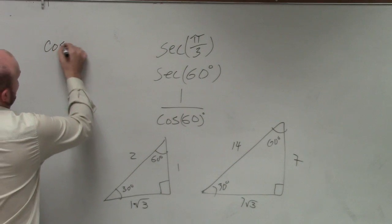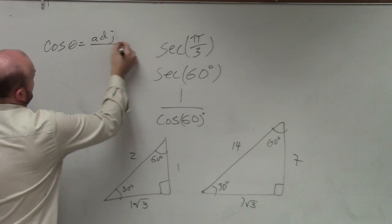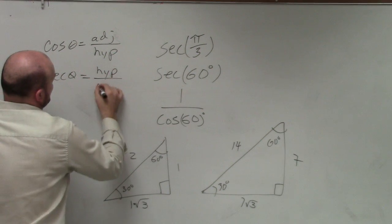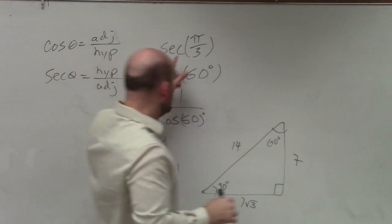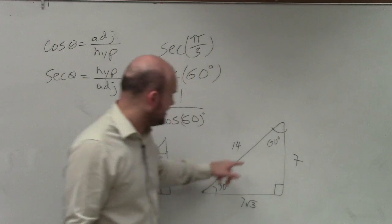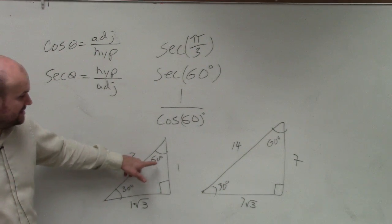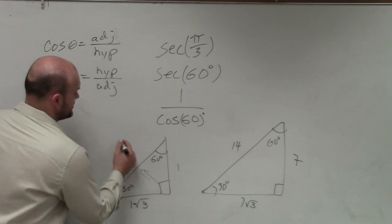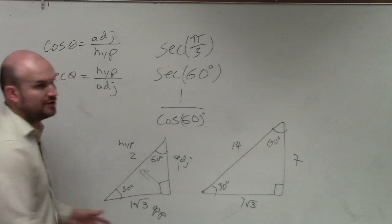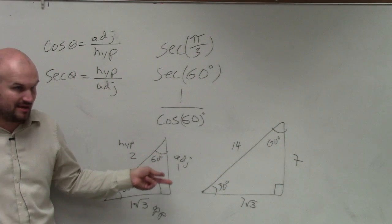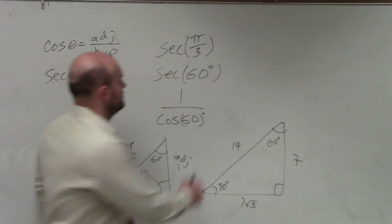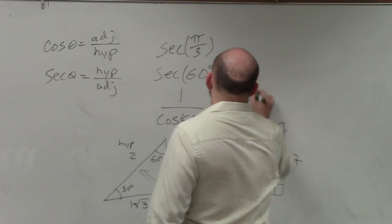We know that the cosine of theta is adjacent over hypotenuse. So the secant of theta is hypotenuse over adjacent. Now, knowing that pi over 3 is the same thing as 60 degrees, it's a little bit easier for me to look at a triangle and say, what is, if there are 60 degrees, this is my hypotenuse, this is my adjacent, and this is my opposite. Does everybody agree how I labeled that triangle based on 60 degrees being my angle? So it's hypotenuse over adjacent, 2 over 1. So that is your answer.